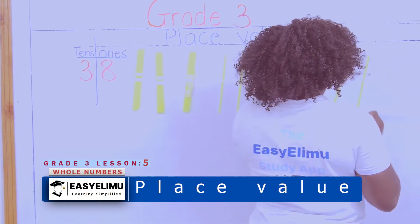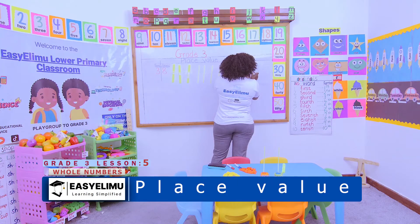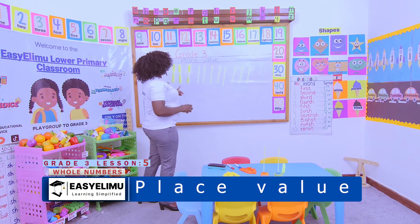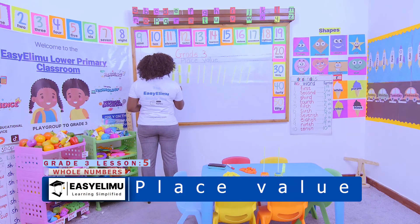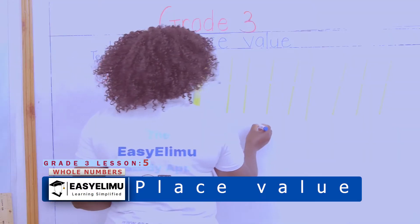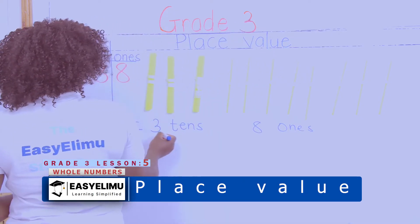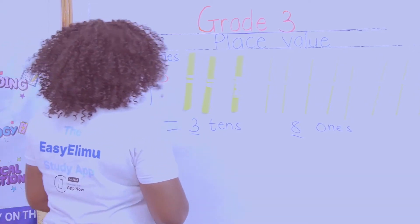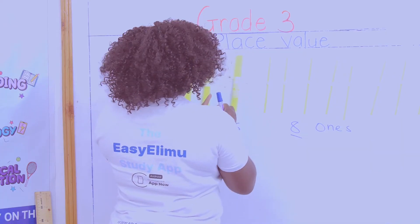So I have shown number 38 using the bundles of sticks, which gives me 3 tens — 1, 2, 3 — and how many ones? These are 3 tens and 8 ones. So if I'm asked, this number in total is which number? 38 is equal to 3 tens and 8 ones.